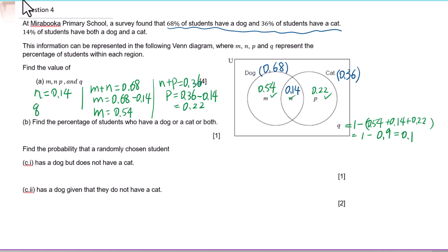Q equals 0.1. Since M, N, P, and Q represent the percentage of students, we need to convert to percentages. N is 14%, M is 54%, P is 22%, and Q is 10%.